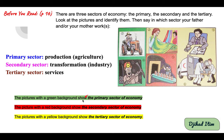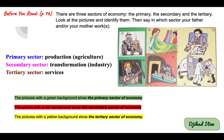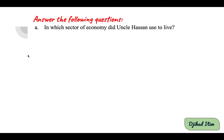The pictures with the green background show the primary sector of economy: production and agriculture. Pictures with a red background show the secondary sector: transformation and industry. Pictures with a yellow background show the tertiary sector: services. After reading the text, you will be able to answer the following questions. Question A: in which sector of economy did uncle Hassan used to work?